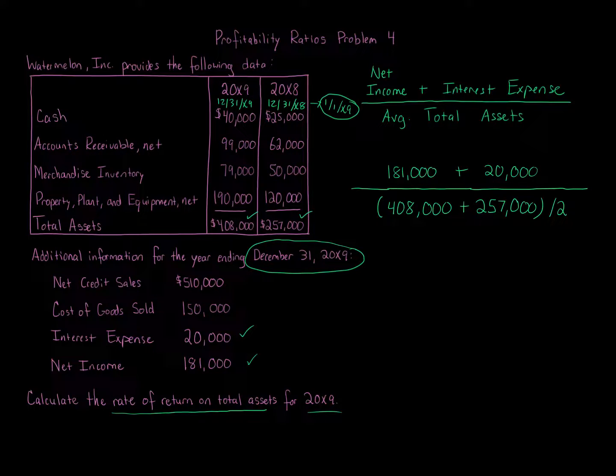When we calculate this, do this calculation, we're going to get 60.45%. That is our rate of return on total assets. And the return on total assets, it measures the profitability of total assets without considering how the assets were financed.